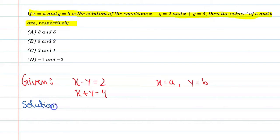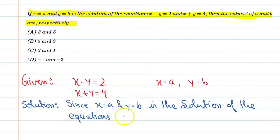Since x equal to a and y equal to b is the solution of the equations x minus y equal to 2 and x plus y equal to 4, alright.